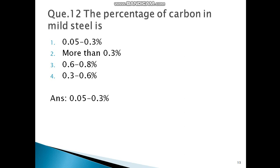The next question: The percentage of carbon in mild steel is? Mild steel means low carbon steel. There are three types of carbon: low carbon, medium carbon and high carbon. So low carbon steel is also called mild steel.